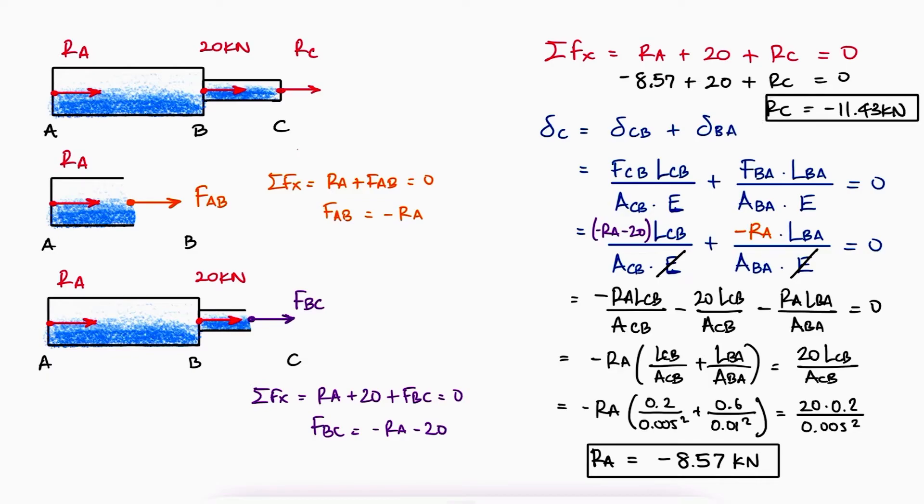As you can see, without the superposition method, we are not performing extra calculations, like in this case, the theoretical displacement of C if the wall wasn't there, and we're not splitting the problem into two axial deformation problems. We're only writing one equation that allows us to solve for one of the reaction forces right away.